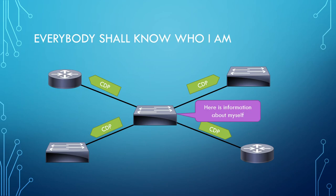It's important to know that CDP is a Cisco proprietary protocol, which means it can only be used with Cisco devices. Only Cisco devices can run CDP and only Cisco devices will be able to understand CDP packets. CDP data is encapsulated only in a Layer 2 header and trailer, because it's a data link layer protocol at Layer 2 of the OSI model. We don't need to encapsulate it in any TCP, UDP, or IP header.